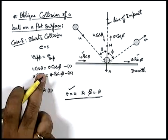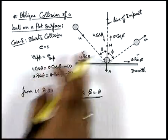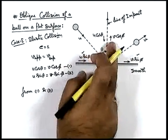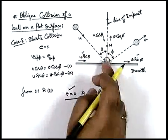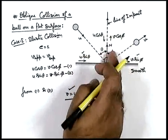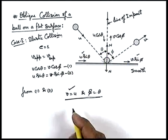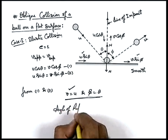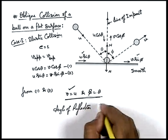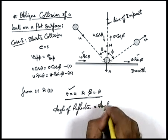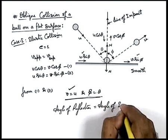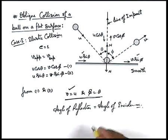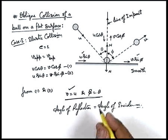Hence we can state the ball will rebound with the same speed. With the logic of equation one, since approach and separation velocities are equal, we can state that the angle of reflection must be equal to the angle of incidence. So be careful about the logic here.